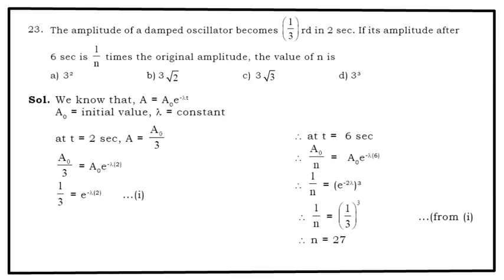Now at t = 6, let us see what happens. At t = 6, A₀/N = A₀·e^(-6λ). Minus λ·6 we can split into this way: that is e^(-2λ) to the power of 3. Now e^(-2λ) is known to you, that is 1/3. So 1/3 to the power 3. So N becomes 27. So the answer is D which is 3³.